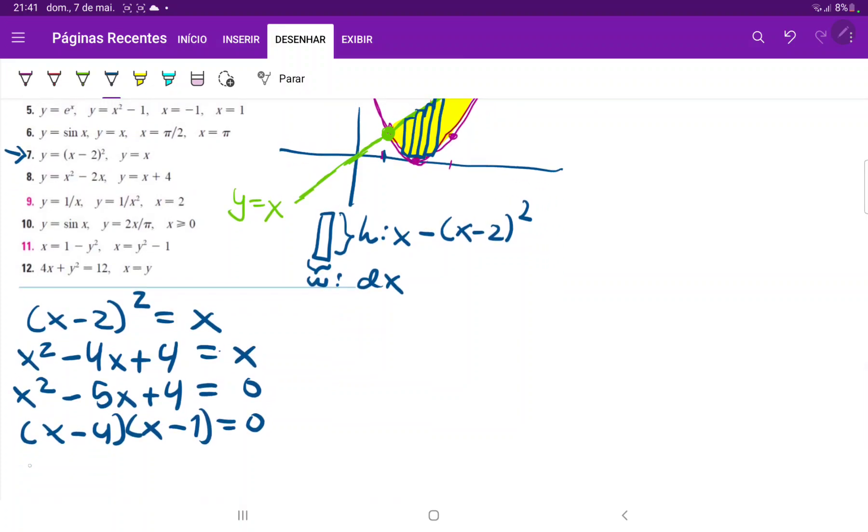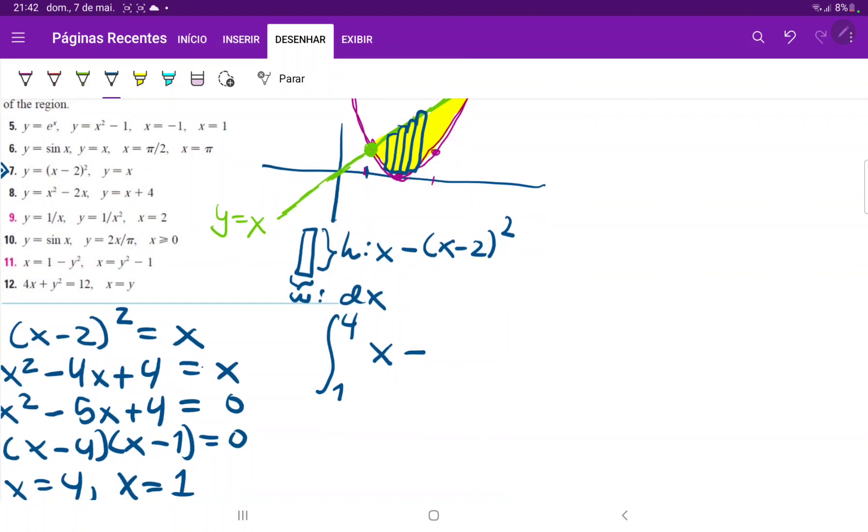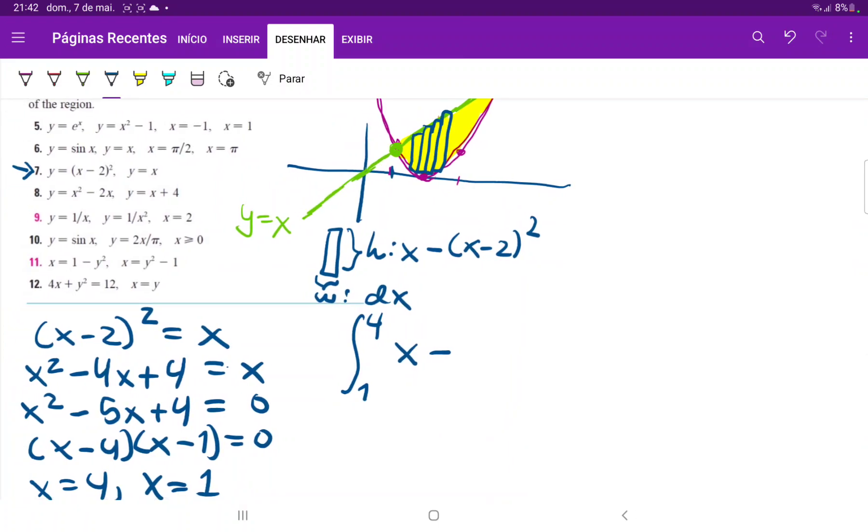So we can very clearly see here that our bounds are x equals 4 and x equals 1. So let's set this up. This is the integral from 1 to 4 of the upper curve, which is just x, minus the lower curve, which is x minus 2 squared, and I'm actually going to write this in the expanded form that we've done already. So minus x squared minus 4x plus 4, all this times dx.